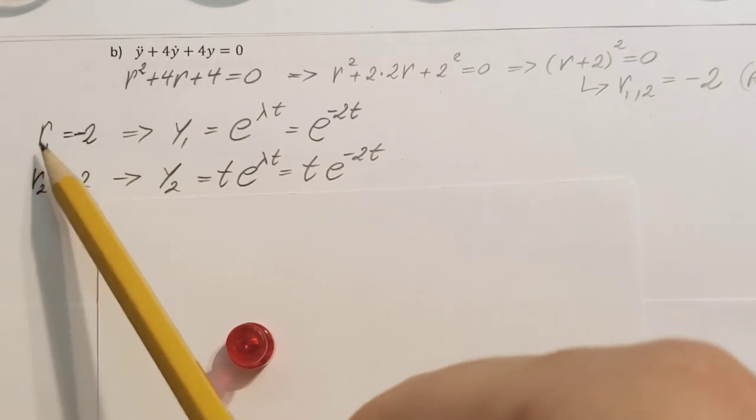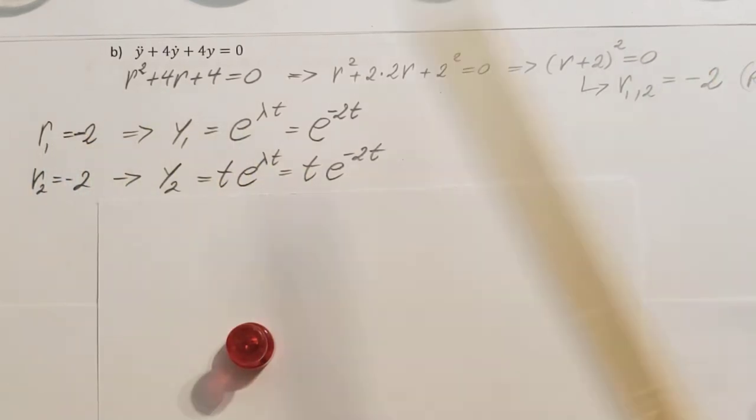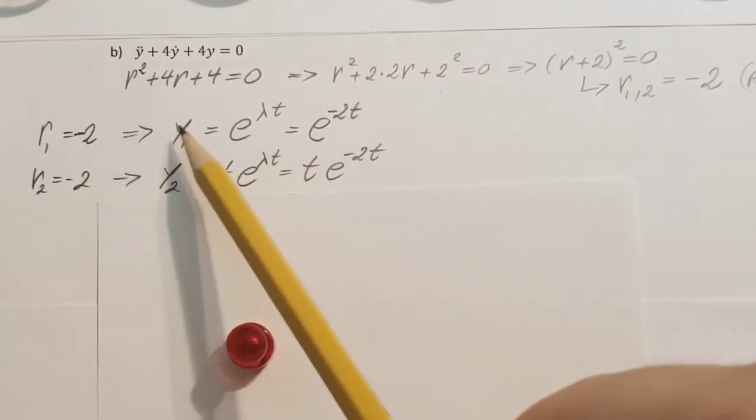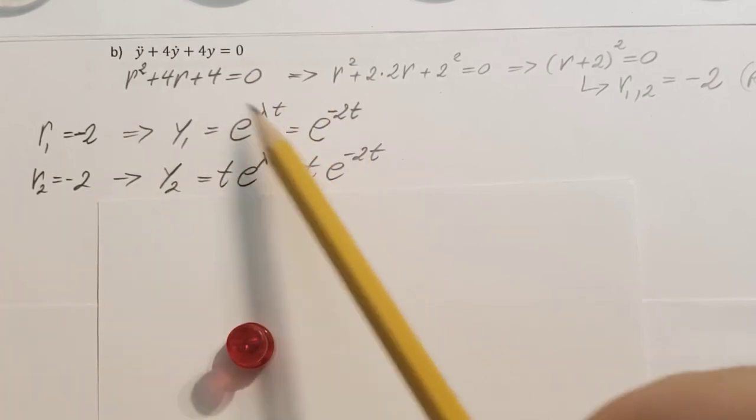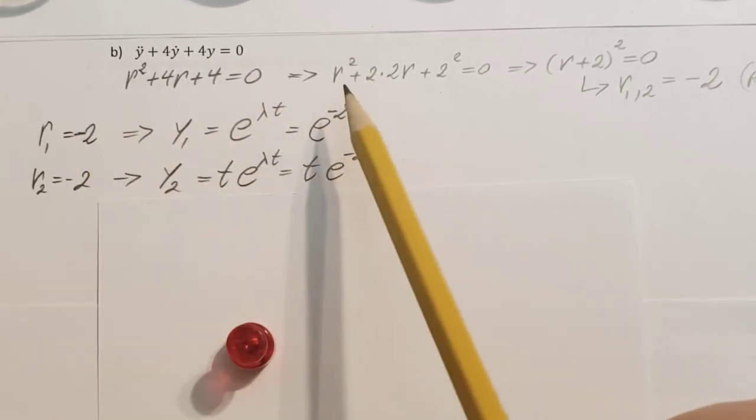So take the first one, r1 equals negative 2. That's going to give us y1 equals e to the lambda t, and lambda is my negative 2, so e to the negative 2t. That's all there is.